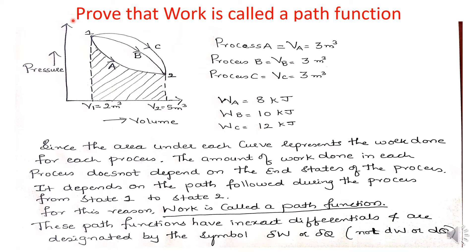Now let us prove that work is called a path function. We have considered three processes. Process A: the system moves from state 1 to state 2 following path A. Process B: the system reaches from state 1 to state 2 following path B. Process C: the system reaches from state 1 to state 2 following path C. So we have three paths — path A, path B, and path C.